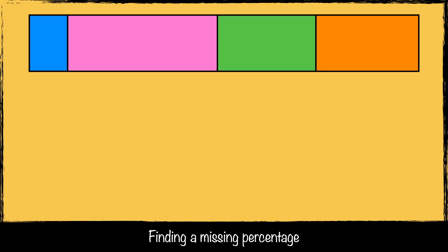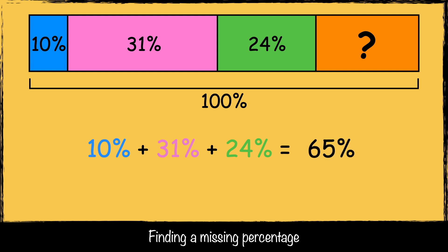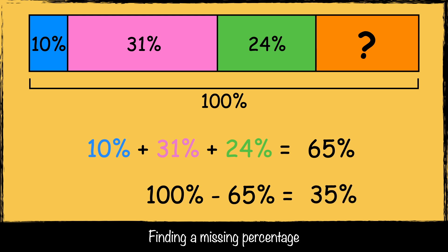Here's another challenge. This time the shape is split into four parts. 10% of the shape is blue, 31% of the shape is pink, 24% of the shape is green — so we need to work out what percentage of the shape is orange. We start by knowing the whole shape should be 100%. First, we add the percentages we already know: 10 add 31 add 24 equals 65.